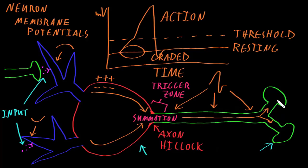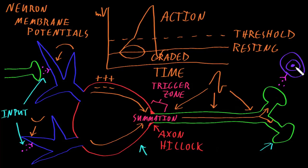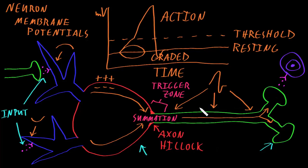When an action potential reaches an axon terminal, neurotransmitter is usually released at a synapse to bind to receptors on the target cell of the neuron. That neurotransmitter release and the binding of neurotransmitter receptors on the target cell may change its behavior. The input information contained in the size and duration of graded potentials in the dendrites and soma is converted into the temporal pattern of action potentials conducted down the axon, and then into the amount and temporal pattern of neurotransmitter release at the synapse. This is how neurons transmit information to their target cells.